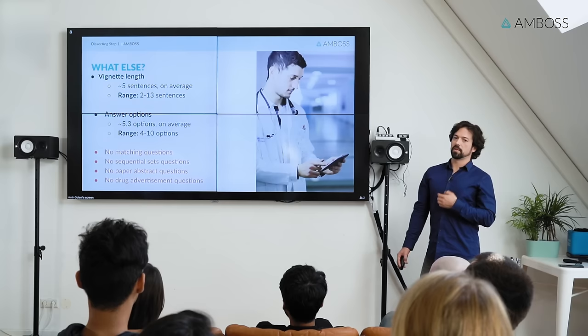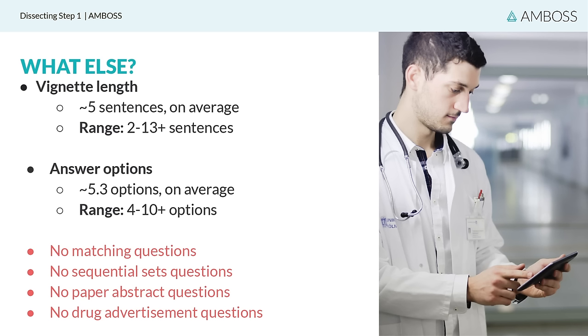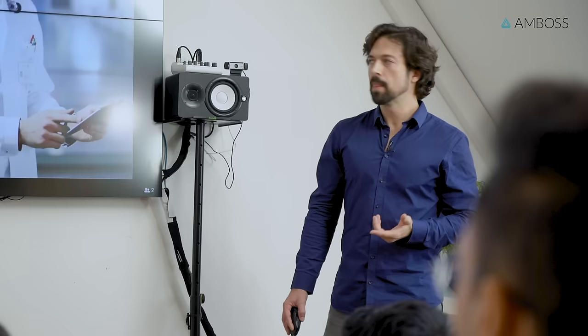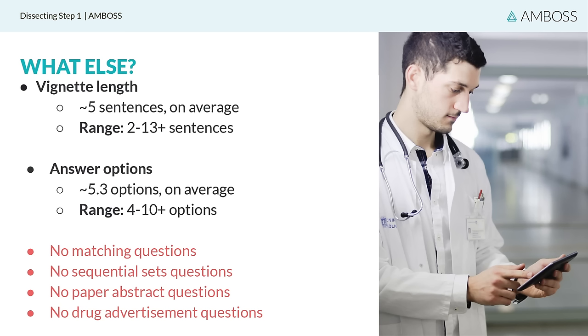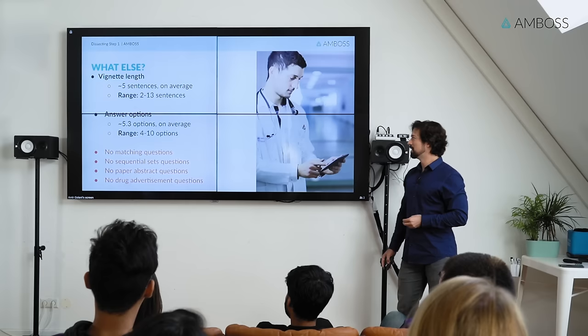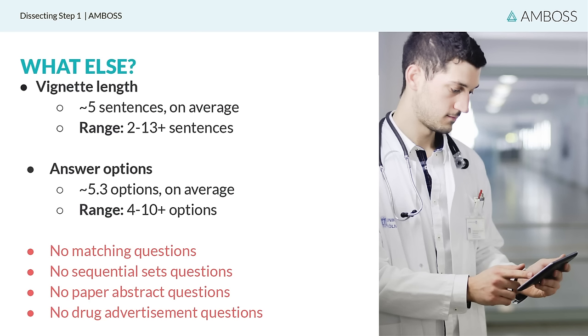Based on our own research at AMBOSS, there are roughly five sentences for vignettes in Step 1, but this varies greatly — anywhere from two to thirteen sentences. The average number of answer options is 5.3, with a range of four to ten. Luckily for Step 1, there are no matching questions, no sequential sets, no paper abstract questions, and no drug advertisements — something you can look forward to in Step 2.